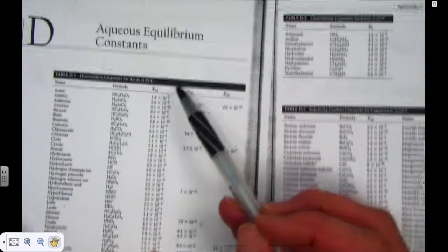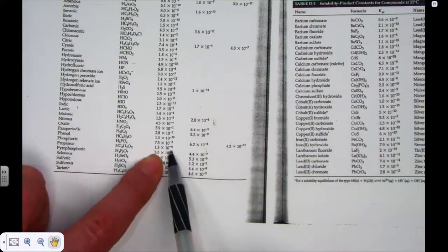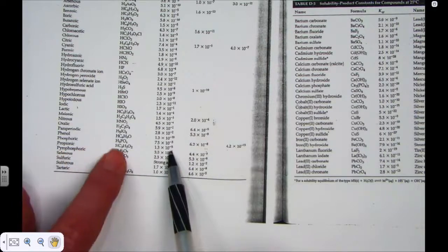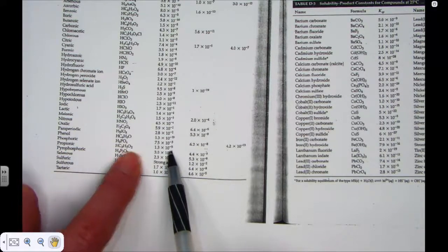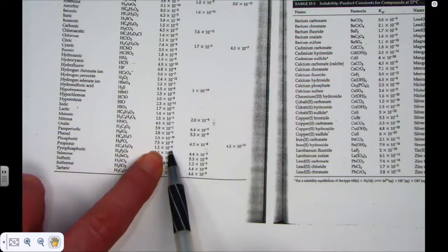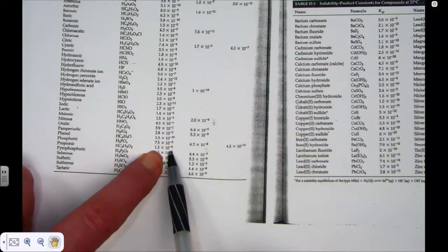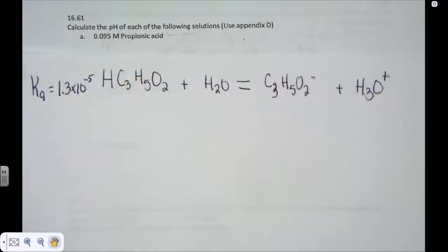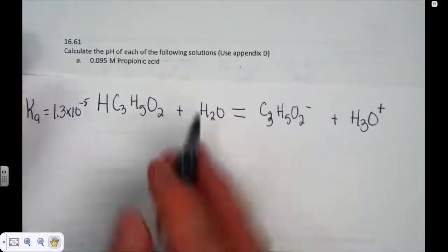We know that when acids are placed into water, we set up conjugate pairs. The proton is released from the acid giving us C3H5O2 negative and the hydronium polyatomic acid ion. So there's our equilibrium. The loss of the first proton, Ka1. And I'm finding that from the Appendix D test taking tool, 1.3 times 10 to the negative fifth. What's the pH of our solution?